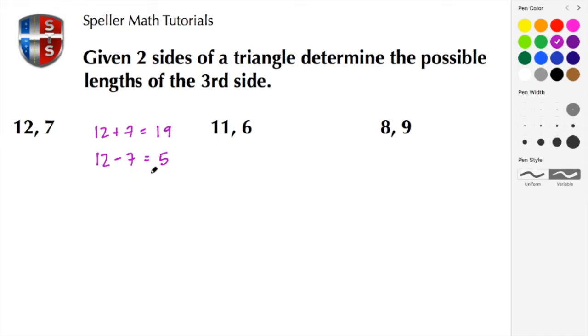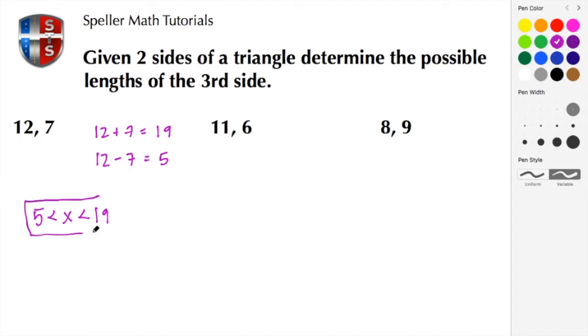So we have two boundaries: 5 and 19. What we need to remember is that the third length is never going to be 5 and it's never going to be 19 — it has to fall strictly between 5 and 19.